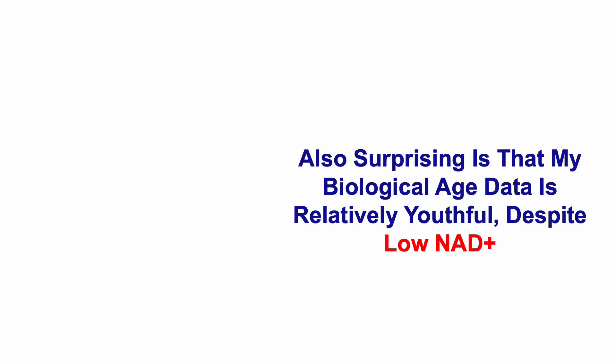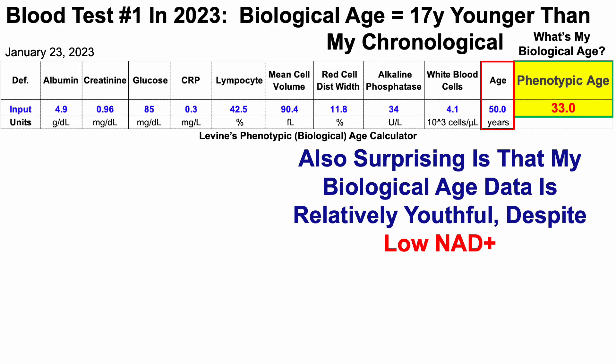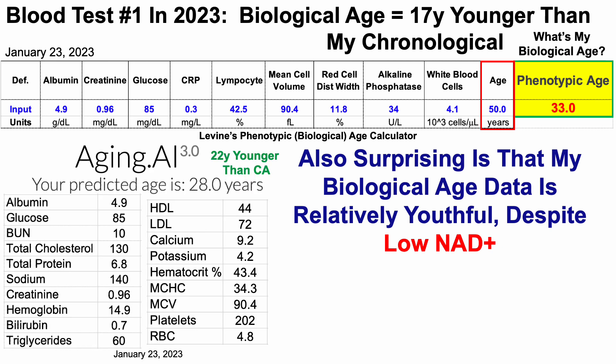This data for my relatively low NAD is also surprising because my biological age data is relatively youthful — in the presence of this 25.6 micromolar NAD, measured the same day I sent blood for analysis. When entering biomarkers for Levine's PhenoAge, I was 17 years younger on that day, and using Aging.ai, 22 years younger.